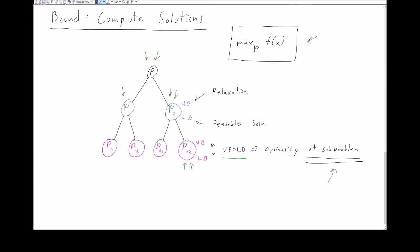This is the general idea behind branch and bound: we branch, we split, we compute an upper bound and a lower bound. If we reach optimality we stop, and if we don't then we split further until we do. From our tree structure, at the leaf nodes we've decomposed our original problem into very small subproblems. If we compute the optimal solution at each of these smaller problems, we can recover an optimal solution to our original problem — it's simply the best optimal solution found across all the leaf nodes.